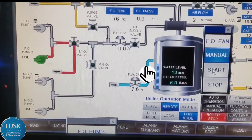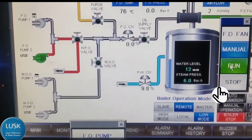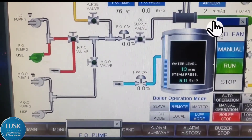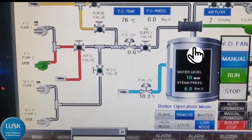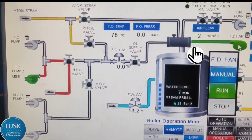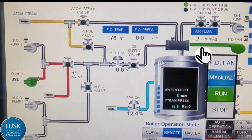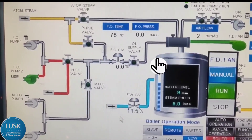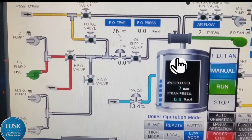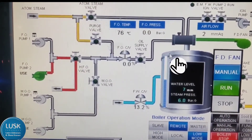Now I am going to start the FD fan — I mean forced draft fan. Here you can see it turned green color. The fan is used because there will be an air and fuel ratio, and air is required for that, so we are using the FD fan. The FD fan is a flap type and it is in closed condition right now — showing 2mm.